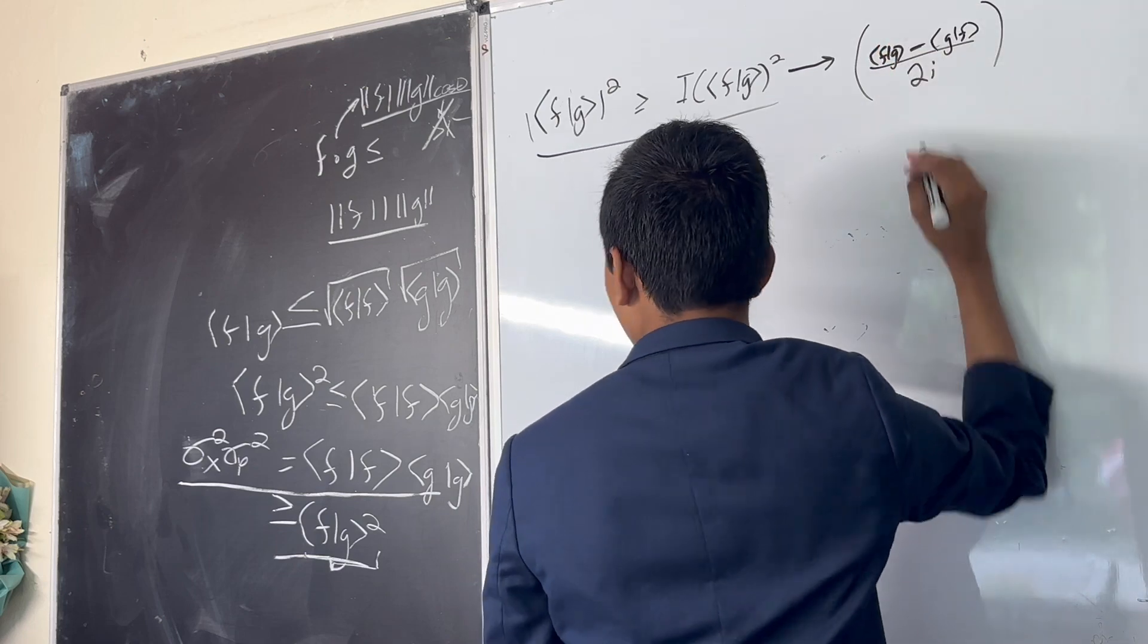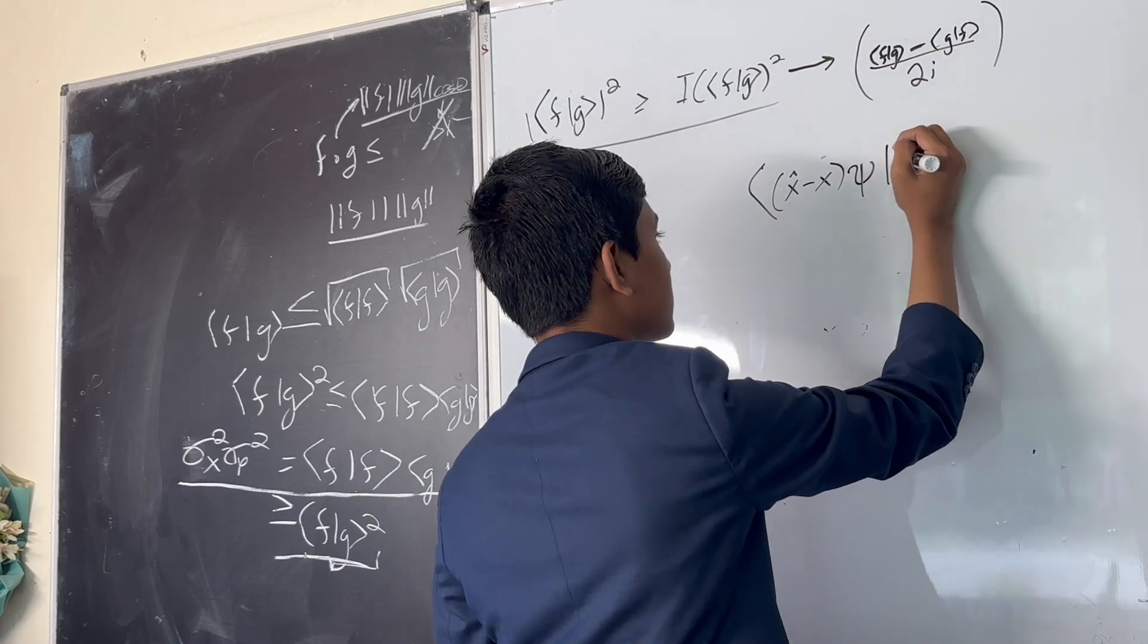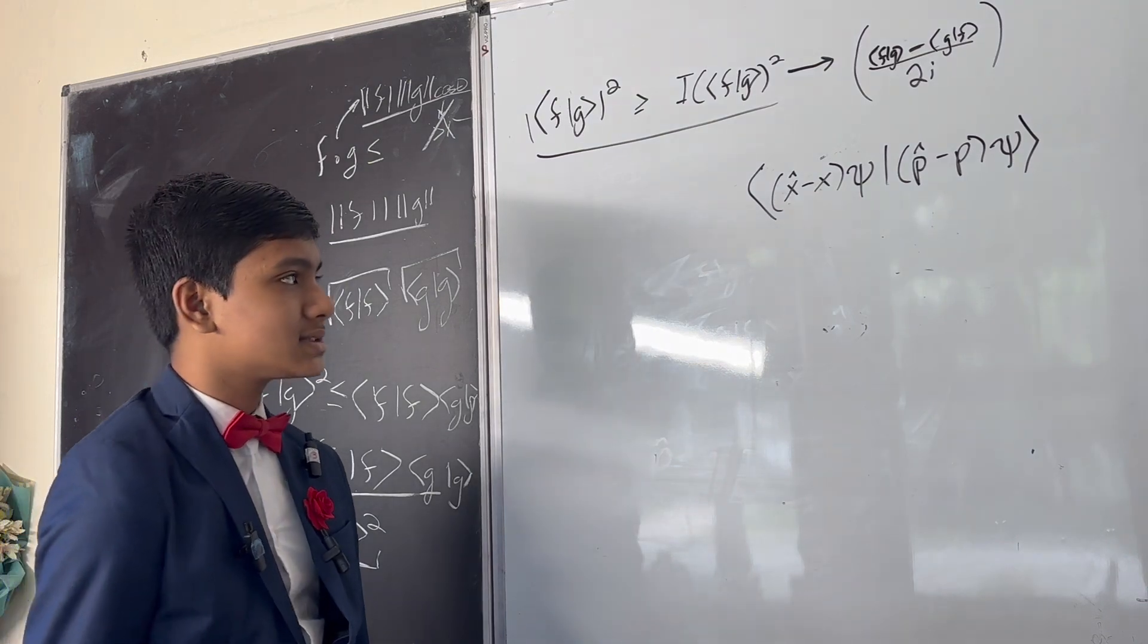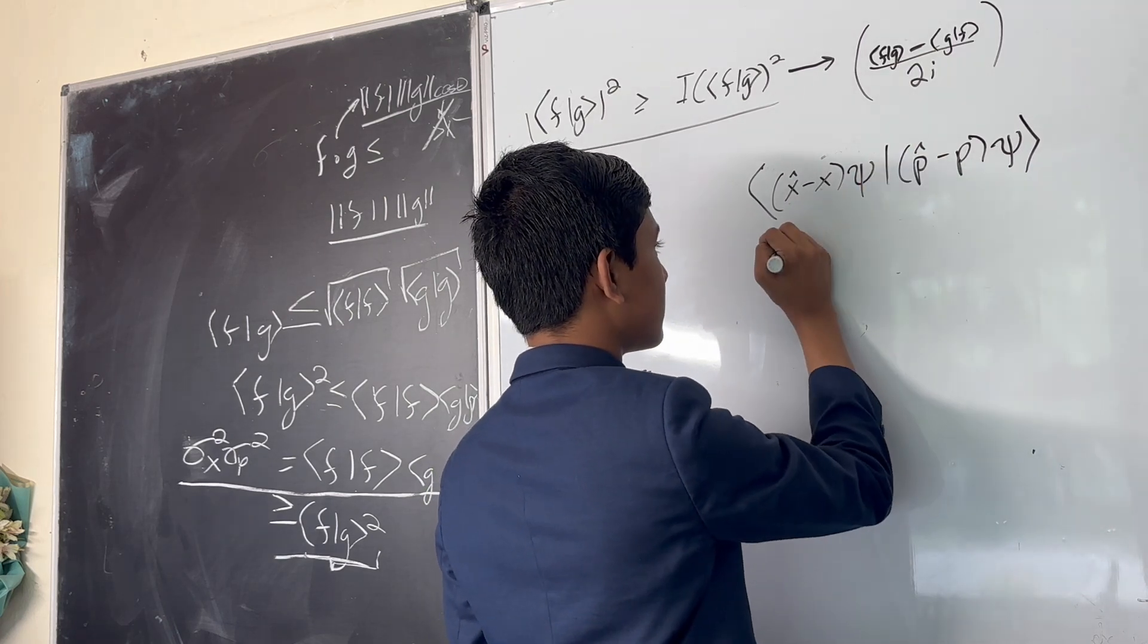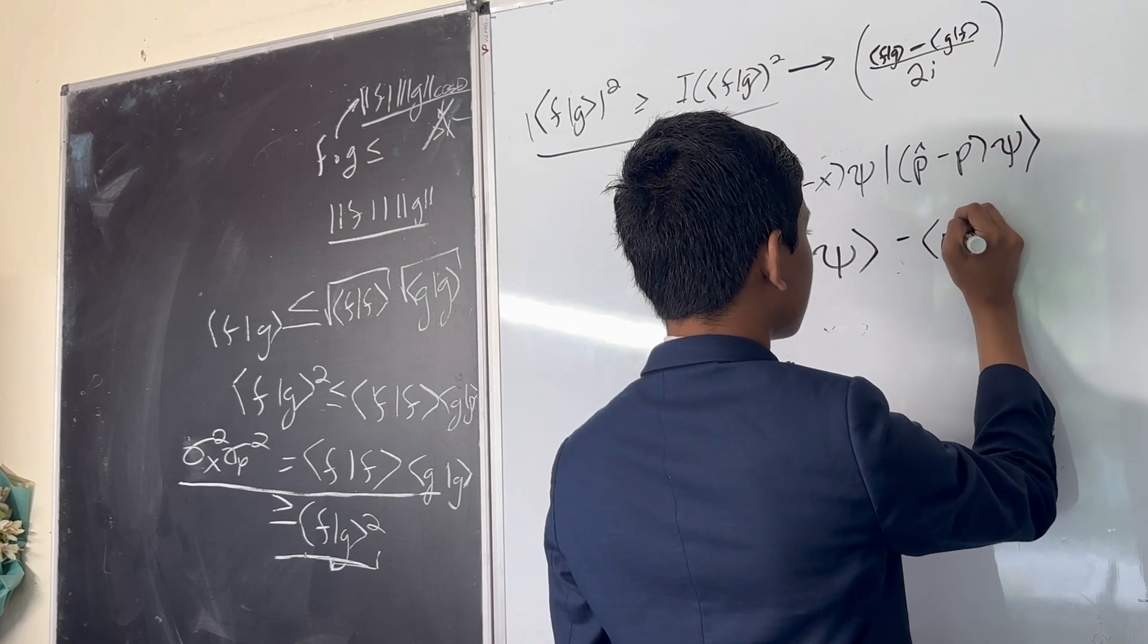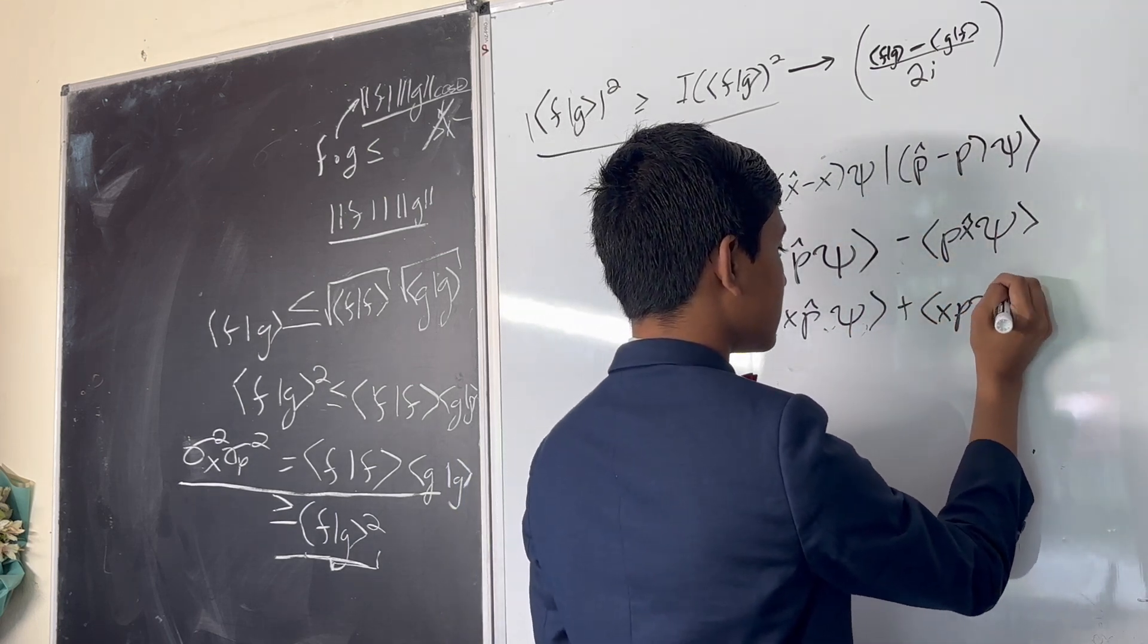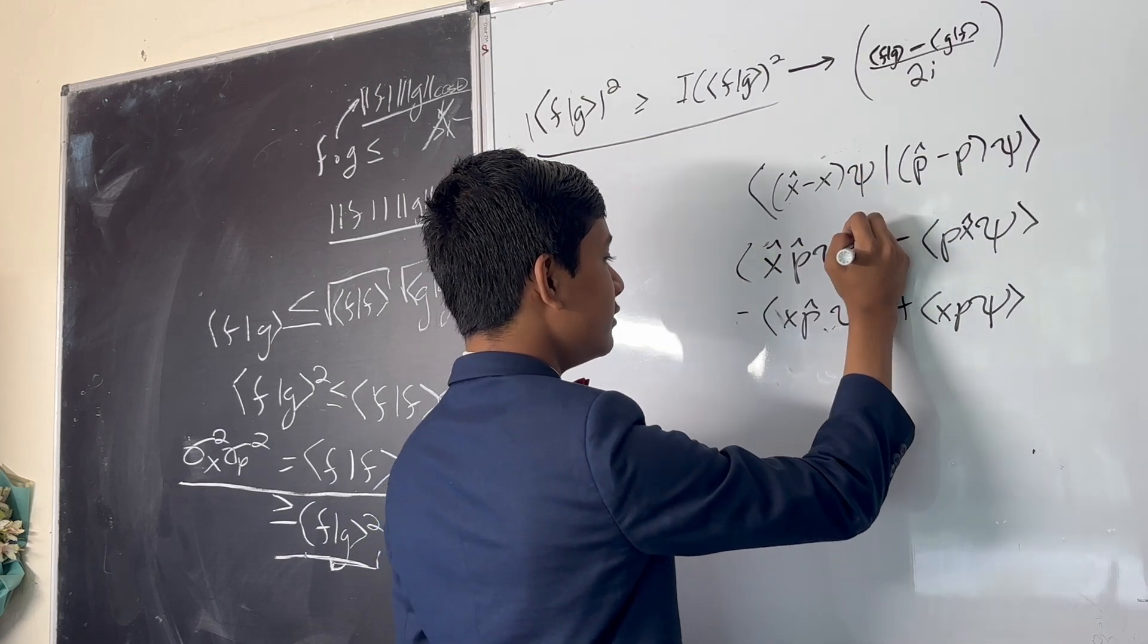Now how do we approach this? Well, what is f dot g? You get x hat minus x psi multiplied by p hat minus p psi. So how do we actually go about writing this out? Well, we use the distributive property. So this becomes psi minus psi minus psi plus, and at this point, using the property that oh sorry, I forgot to multiply it to psi.